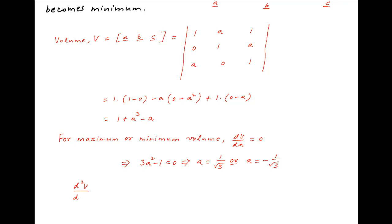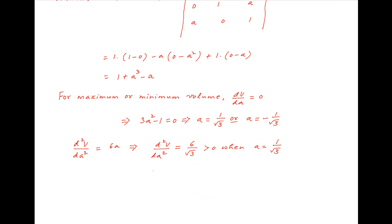Now the second derivative of V with respect to A is equal to 6A. Therefore the value of the second derivative when A is equal to 1 upon root 3 is equal to 6 upon root 3, which is positive. And the value of the second derivative when A is equal to minus 1 upon root 3 is equal to minus 6 upon root 3, which is negative.